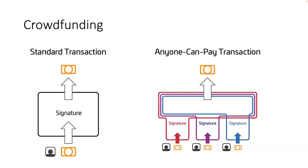No, she wouldn't be able to broadcast it because the input value is not equal to the output value — she would need more inputs to match the 100 bitcoin output if she only put in one. Exactly — it's a so-called partial transaction. The inputs amount is less than the output amount, so if she broadcasts it, it will be rejected. The only way to make it valid is for other people to contribute.